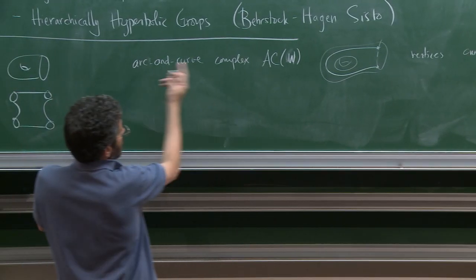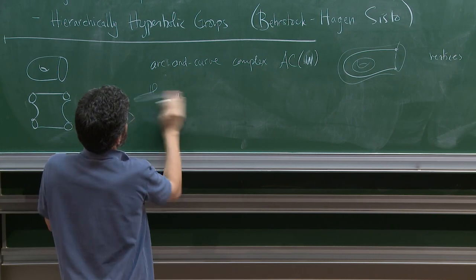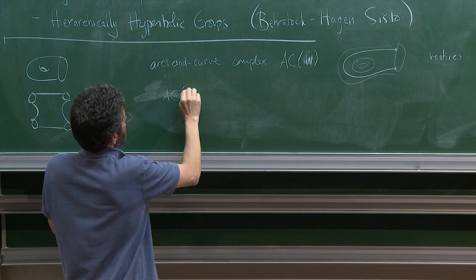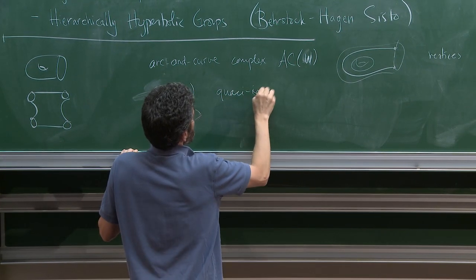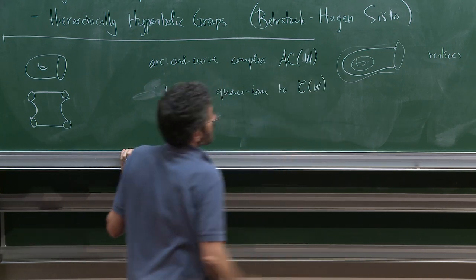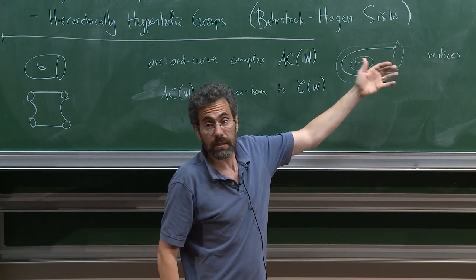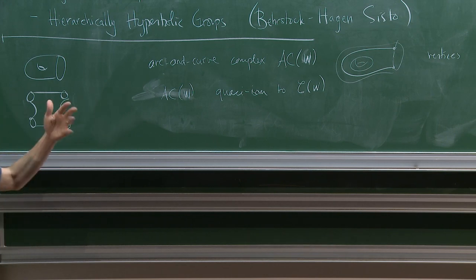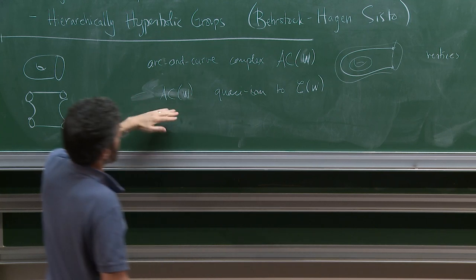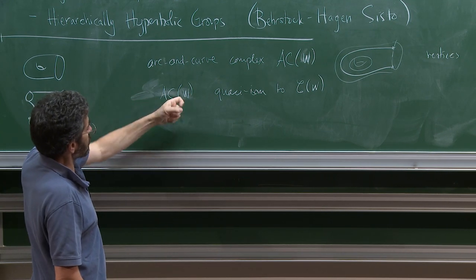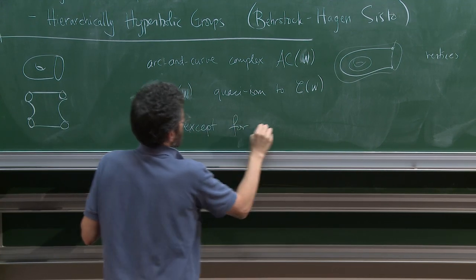It turns out to be useful to think about that. One of the problems on the exercise set was to show that AC(W) is quasi-isometric to C(W). In other words, if you allow yourself to use arcs as well as curves, you will only change the distance you get by some bounded factor. It's true except for the exceptional cases.